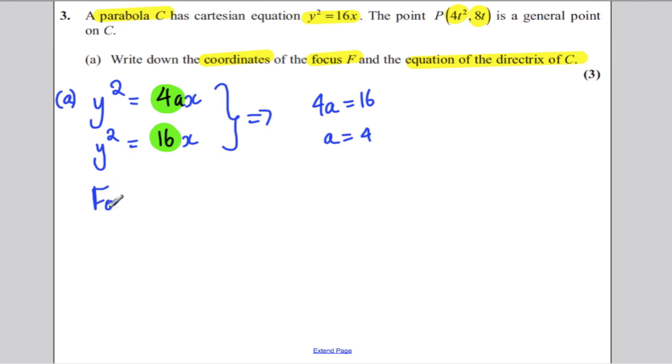Now, the focus of a general parabola is a,0, that's given in the formula booklet, so our focus in this case must be 4,0. And the equation of the directrix is always x plus a is 0, so in our case x plus 4 is 0, or equivalent to that, x is equal to negative 4. It's very important that you write this as a coordinate, you don't just state 4, it's 4,0, and it's very important you write this as an equation of a line in one of those two forms, and they're your three straightforward marks.